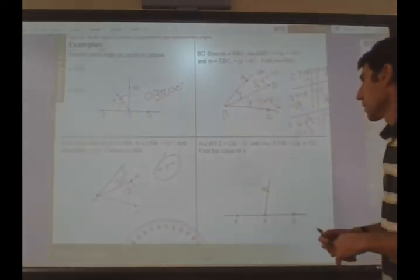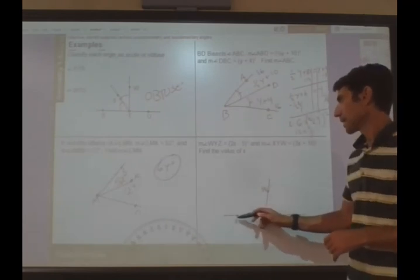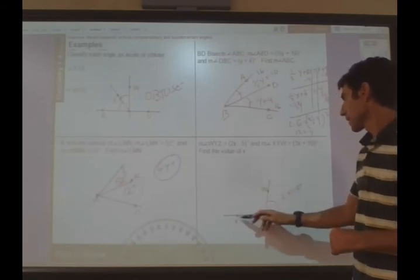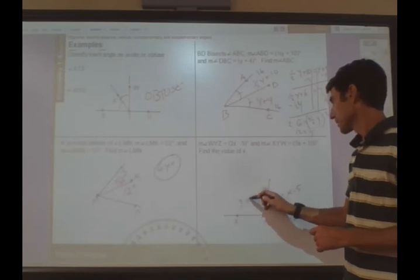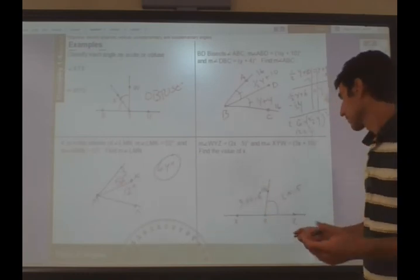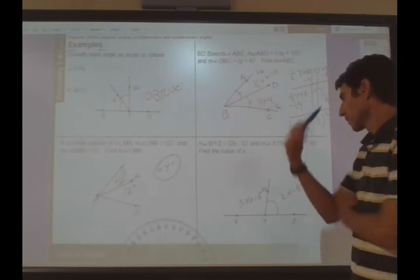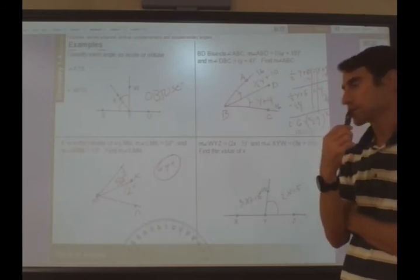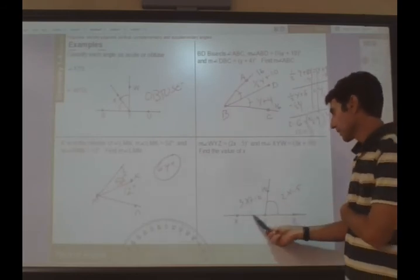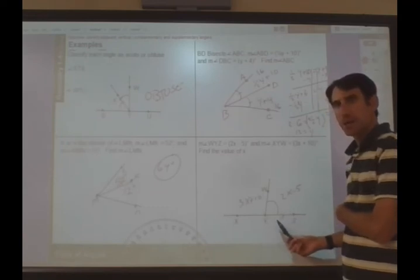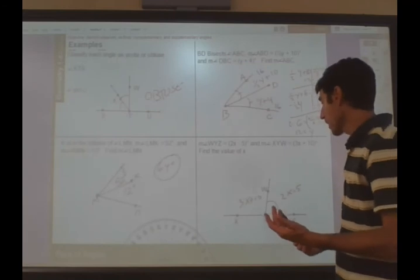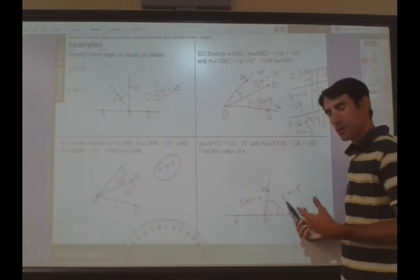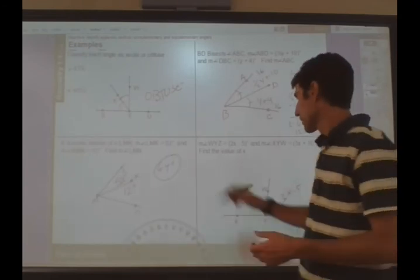The measure of WYZ is 2X minus 5. The measure of XYW is 3X plus 10. Find the value of X. I'm a little stuck on this one. I don't really have any numbers. Well, what do I know? Well, I know pairs of angles. I know we have a straight line here. And a straight line has an angle measurement of 180 degrees. And we have two adjacent angles. So that means 3X plus 10 plus 2X minus 5 has to equal 180 degrees. So let's do it.